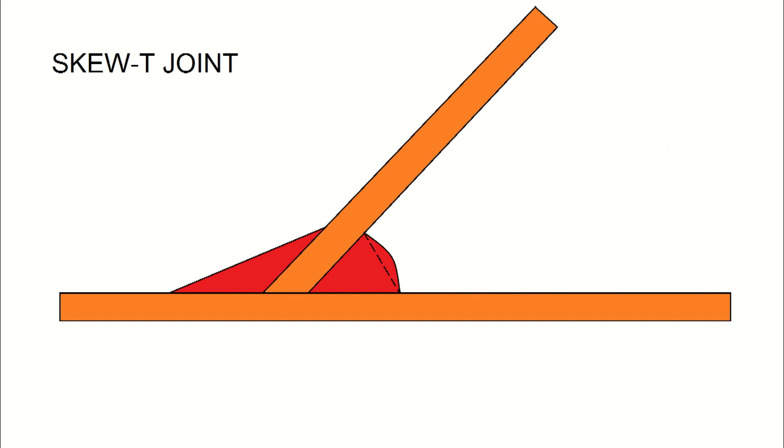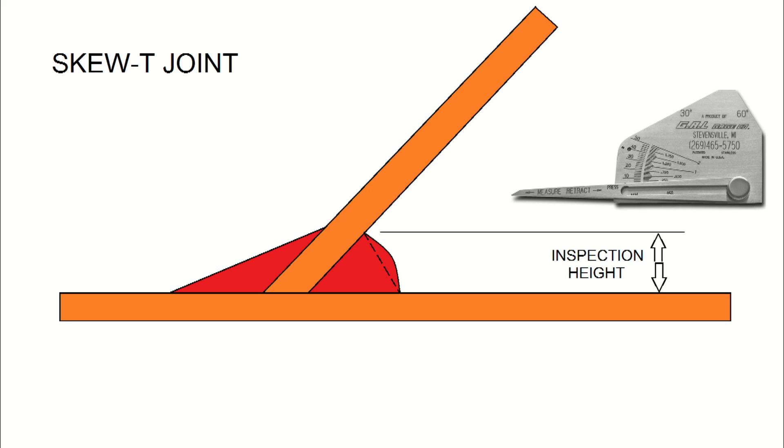SKEW-T welds are usually specified in one of three ways: theoretical throat size, leg size, or the inspection dimension is given. If the inspection dimension is given, the SKEW-T fillet weld gauge can be used directly without any calculations.